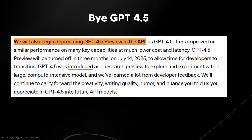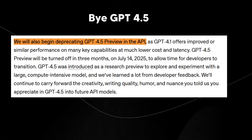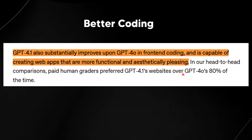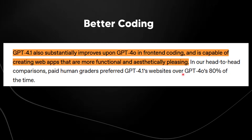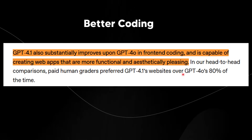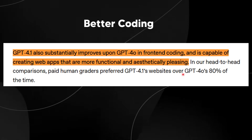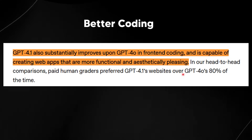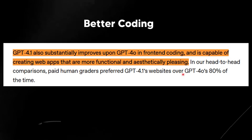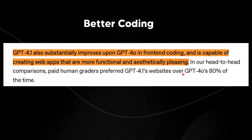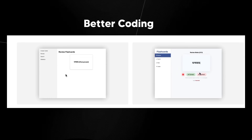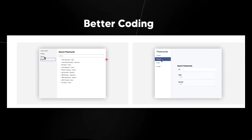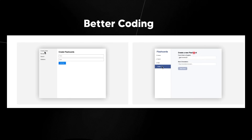I'm a little sad about that because GPT-4.5 was my go-to model for reasoning about day-to-day things — it had a different ability when looking at problems from a human perspective. On the coding side, GPT-4.1 substantially improves upon GPT-4.0 in front-end coding and is capable of creating web apps that are more functional and aesthetically pleasing. In head-to-head comparisons, paid human graders preferred GPT-4.1's websites over GPT-4.0's 80% of the time — a huge improvement.